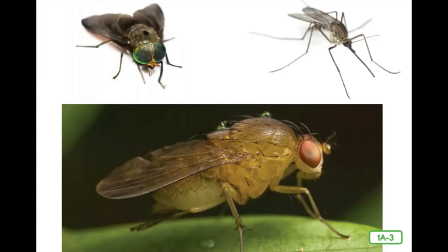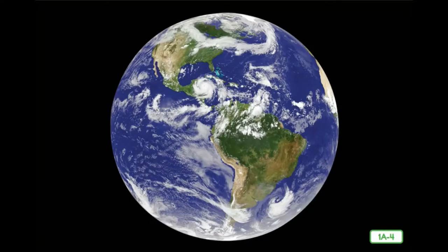I am a housefly, the most common type, but there are many other fly species on earth. A species is a group of plants or animals that are alike in important ways. Horse flies, robber flies, gnats, and mosquitoes all have many different species that belong to the same group. Scientists group animals into different categories — fish, reptiles, amphibians, birds, and insects are just a few of the animal groups that you know.